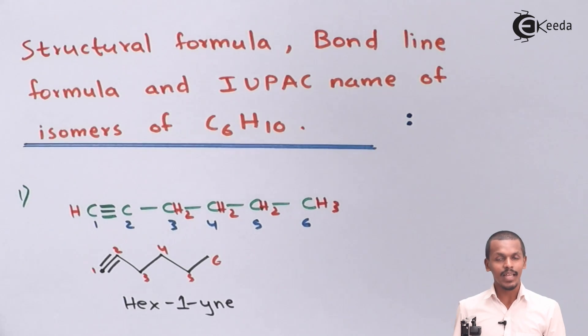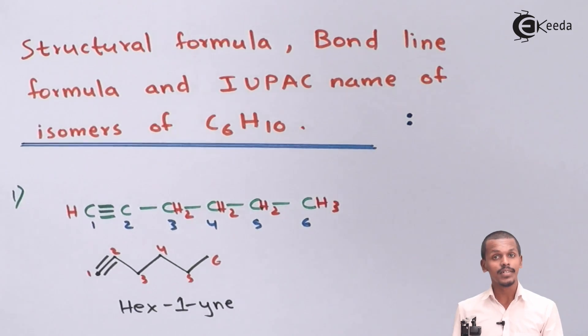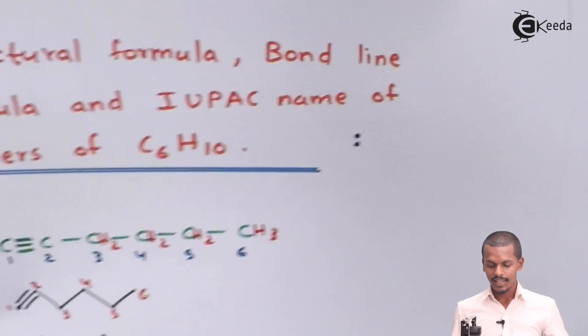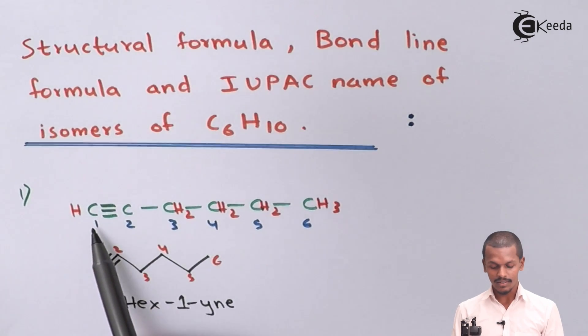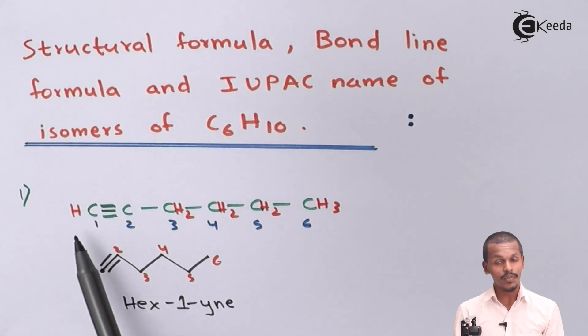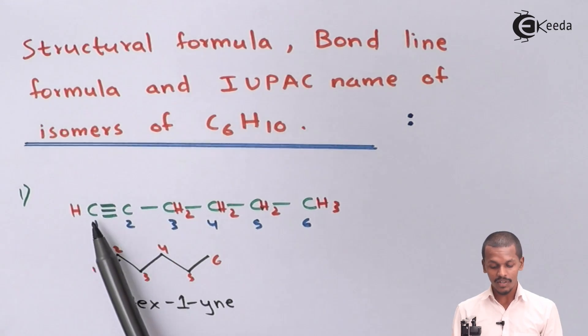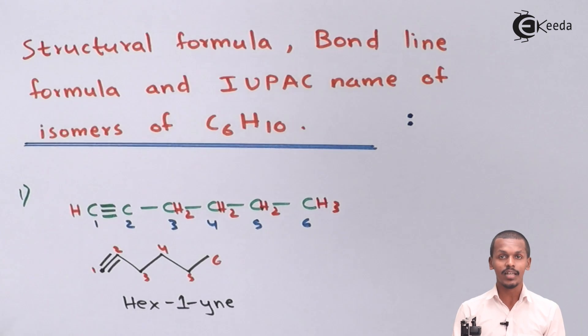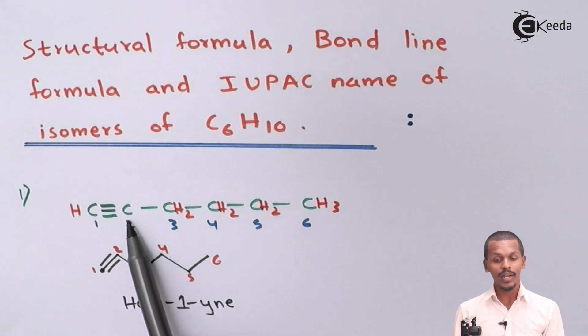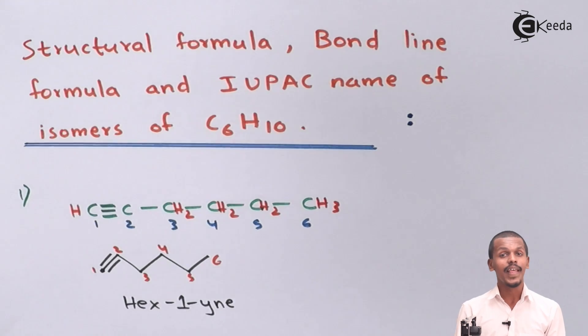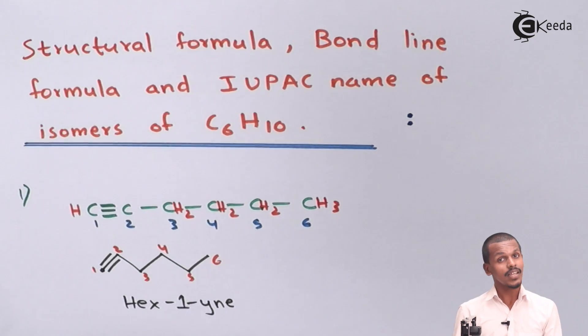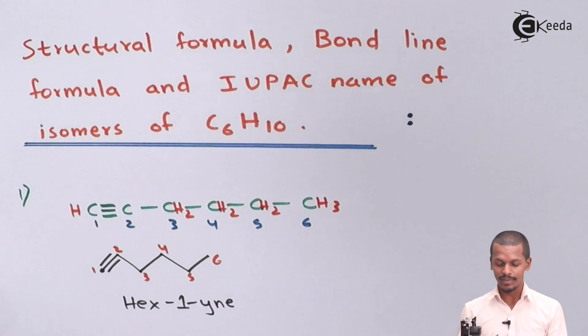Now let us move on to the second isomer of C6H10. It is like the first one, but there will be a difference in the position of the carbon-carbon triple bond. Instead of between carbon 1 and carbon 2, the triple bond will now be between carbon number 2 and carbon number 3.